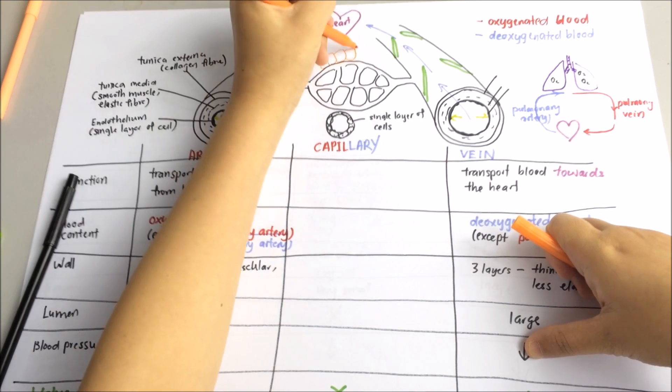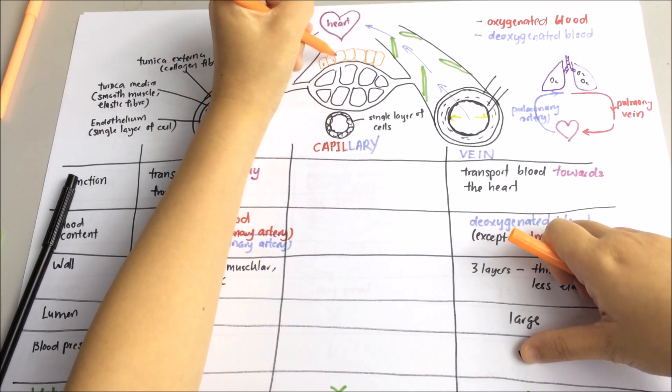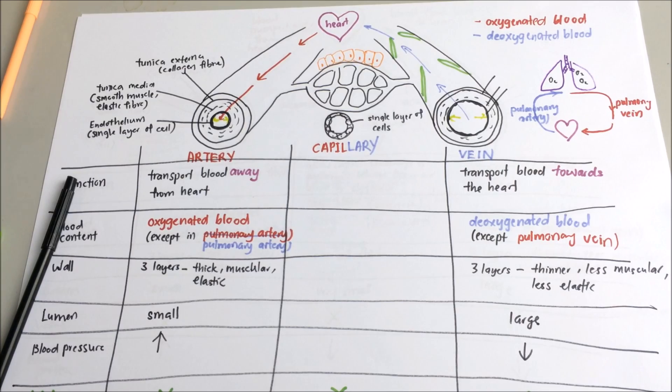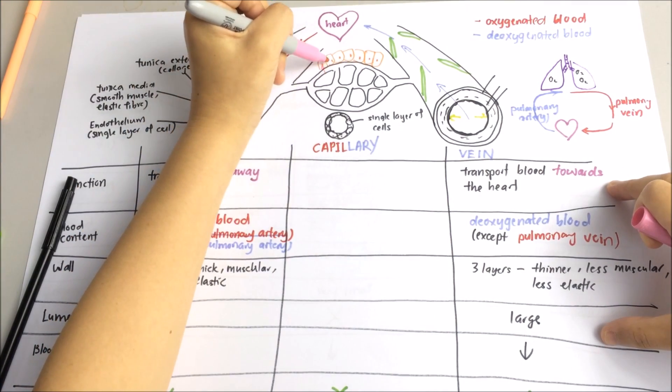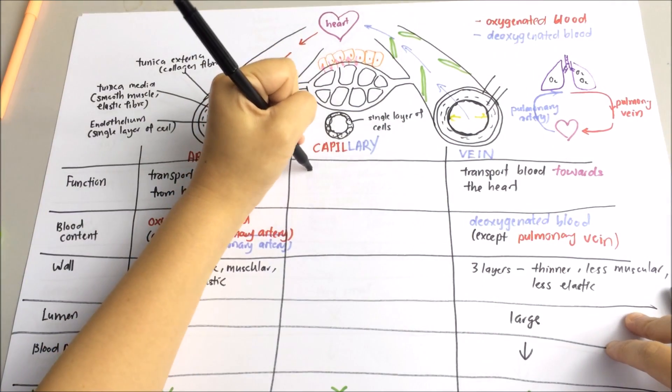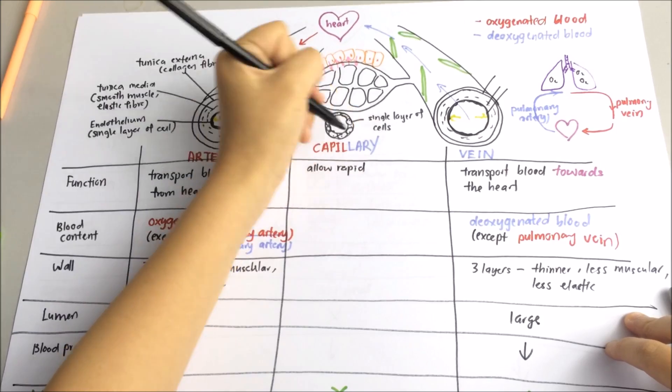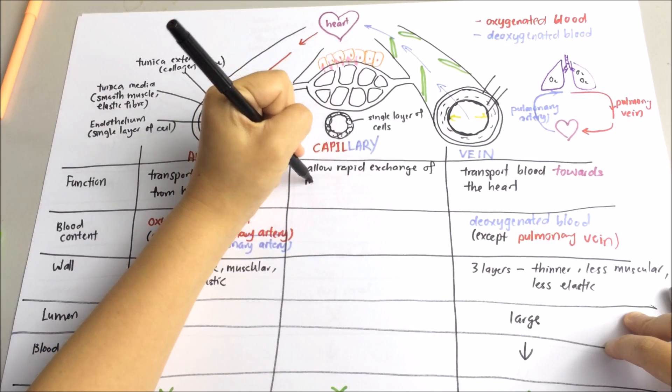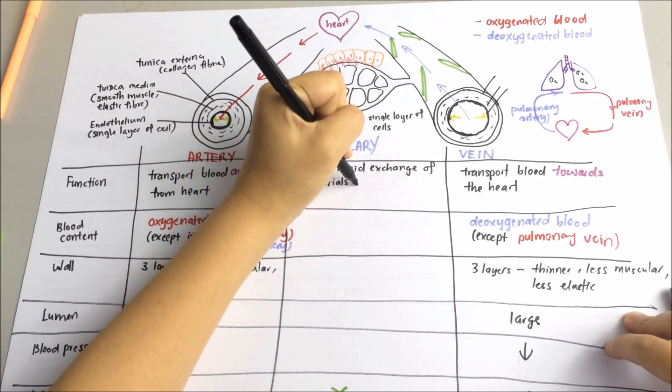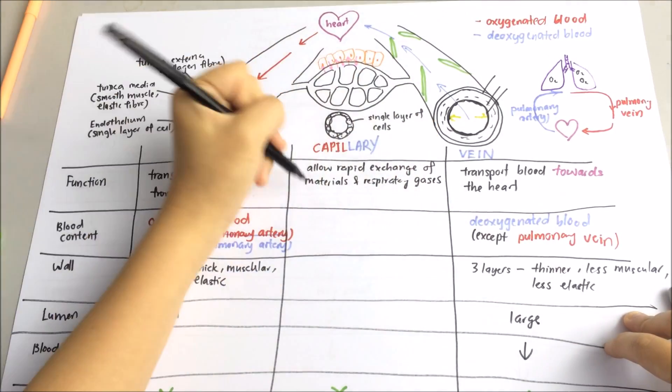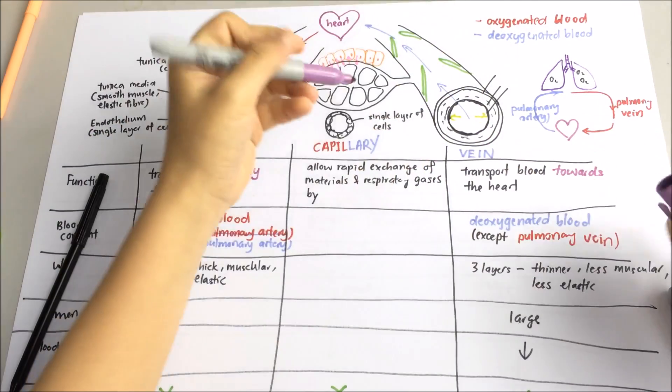These capillaries will form a network of blood vessels through every tissue. And what I'm drawing now represents tissue. It functions to actually bring the blood to the tissue as close as possible and to allow food and oxygen to diffuse from the blood to the cells and waste products to diffuse from the cells to the blood. So the function of the capillary is to allow rapid exchange of materials and respiratory gases by diffusion.